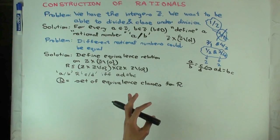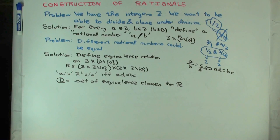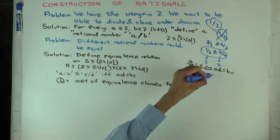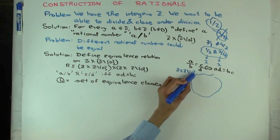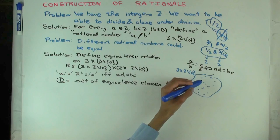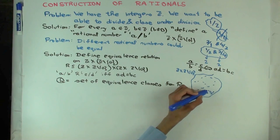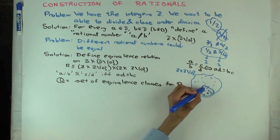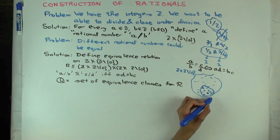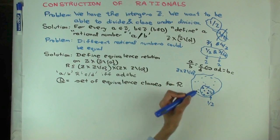What does that mean? That means that you look at this set Z cross Z minus zero, the set of all those pairs. You have all these points here. Now let's say you look at one point like the point one over two. This is equivalent to the point two over four, three over six, and so on. Minus one over minus two. You can get an equivalence class. This entire equivalence class is one rational number.